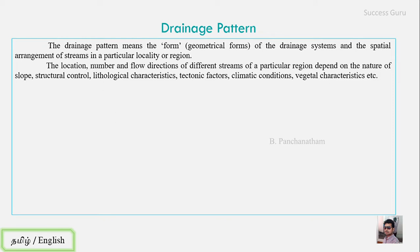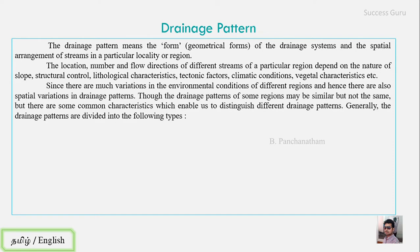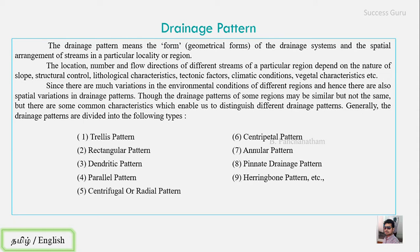Drainage patterns are also influenced by climatic conditions and vegetational characteristics. These are the main controlling factors. Before we look at the controlling factors in detail, let's examine the types of drainage patterns. There are 9 common types, and this lecture will cover the general types.